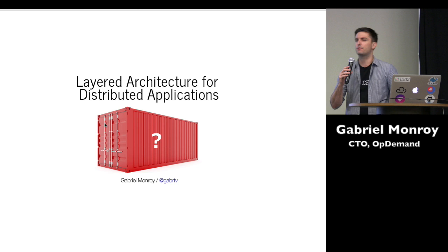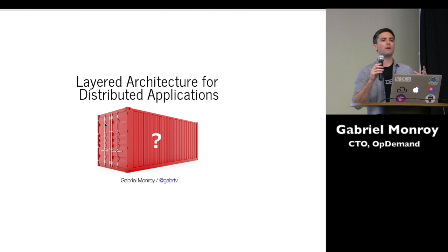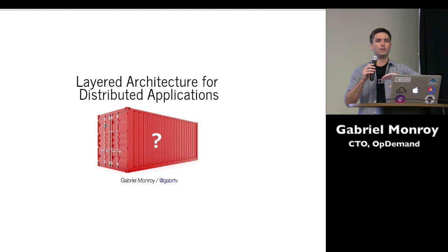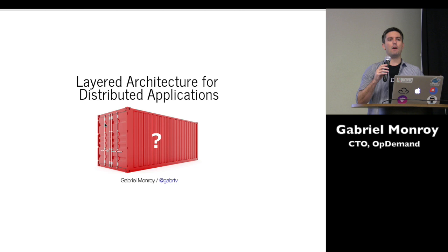I titled the talk 'Layered Architecture for Distributed Applications,' but what I'm really going to talk about is — if you go to my Twitter page, there's a pinned tweet that is essentially a stack diagram of what I had at one point a few months ago put up as my view on the different layers of the container ecosystem. I call it the strata of the container ecosystem. I was asked by Karthik and Paul and some others to come out and talk about that diagram, so let's get right into it.